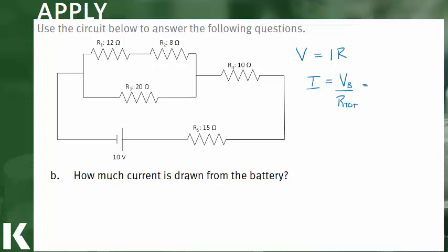We'd have our voltage of our battery, 10 volts. Our total resistance we calculated on part A is 35 ohms. This would give us a current of 0.29 amps.